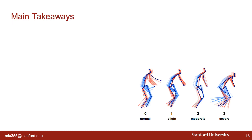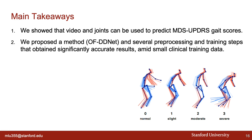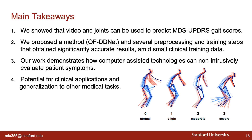Our main takeaways are: first, using only videos and skeleton data extracted from them to predict MDS-UPDRS gait scores works. Second, we propose OFDDNet and several preprocessing and training steps which obtain significantly accurate results on a small clinical dataset. Overall, our work demonstrates how computer-assisted technologies can provide clinical value by non-intrusively evaluating patient symptoms. Our proposed method is simple to set up because it only requires a video of gait as input, making it useful in resource-limited regions with few experts. Such scalable methods can help perform time-intensive labeling of data for research and clinical trials. Finally, our method can be easily generalized and presents opportunities for application to similar video classification problems in the medical space.